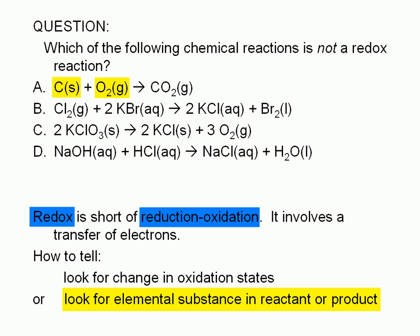In choice B, we have one elemental substance involved as a reactant, chlorine, and another elemental substance involved as a product, bromine. Therefore, the displacement of bromine from potassium bromide by chlorine is also a redox reaction. All single displacement reactions are redox reactions.